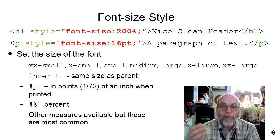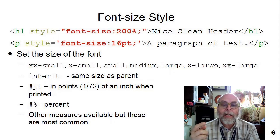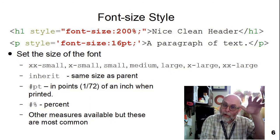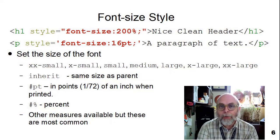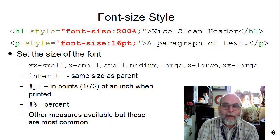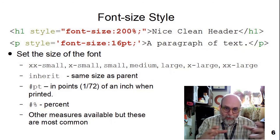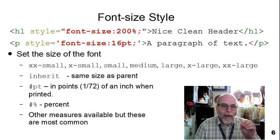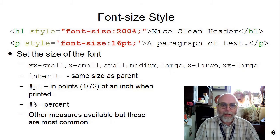Another thing we can change when dealing with fonts is the font-size. You can set the font-size to 200%, making it double the normal size, or 50% if you want it small. You can also use an absolute size — like 16pt in the second HTML statement. Remember that a point is 1/72nd of an inch when printed on paper. That comes from the old days of printing presses, where 1/72nd of an inch was about as thin as you could pound a sheet of lead to space between letters — that's where the measurement of point comes from.